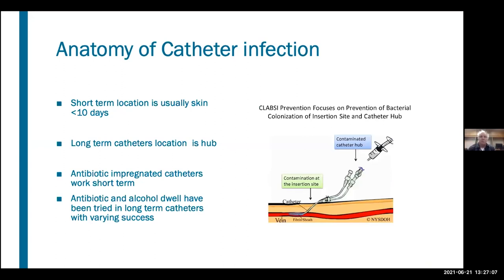Short-term catheter infections are more related to the skin insertion site — more related to the peripheral IV. Long-term catheter infection rates implicate the contaminated catheter hub more often. Many of you know from central catheter exchange kits there's a film supplied over the hub, and we have replaceable antibiotic-impregnated caps that can be placed on the hub. Antibiotic-impregnated catheters work short-term. There's some interest in silver catheters — good evidence in pediatrics, though not used as much in adult parenteral nutrition. Antibiotic and alcohol dwell have both been tried, though alcohol does increase thrombosis risk a little bit.